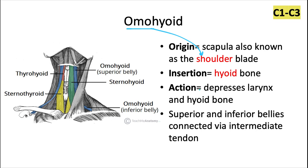The action is to depress the larynx and the hyoid bone. Those superior and inferior bellies that connect below the sternocleidomastoid muscle are connected via their own intermediate tendon, as the digastric muscle was.